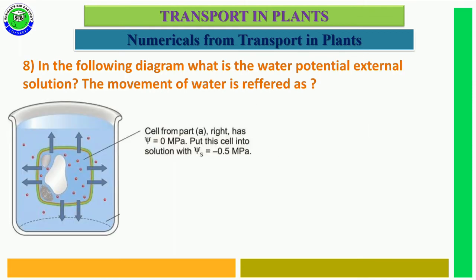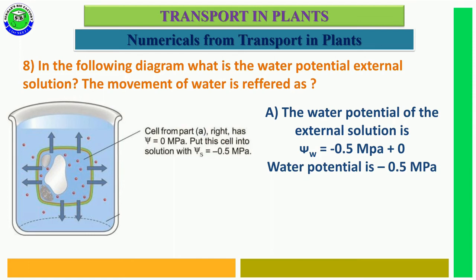Question number 8. In the following diagram, what is the water potential of the external solution and what is the movement of water referred as? The cell has water potential 0 MPa and is kept in a solution with solute potential minus 0.5 MPa. The water potential of the external solution is minus 0.5 MPa, so water moves from inside to outside of the cell — this is called exosmosis.